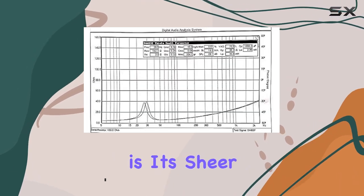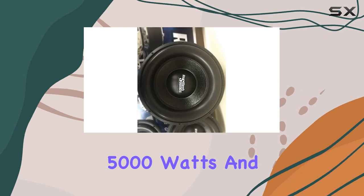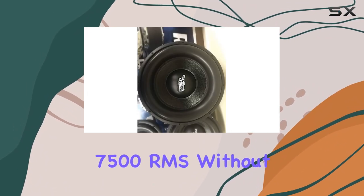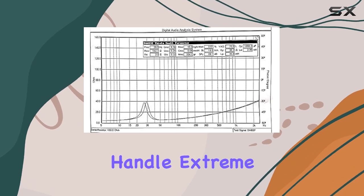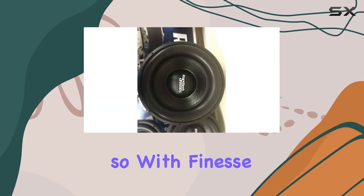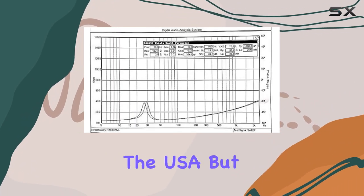What sets the Team 15 apart is its sheer power. With a conservative RMS rating of 5000 watts and tested at nearly 7500 RMS without breaking a sweat, this subwoofer is built to handle extreme power levels. And it does so with finesse, thanks to its 4.8-layer flat wound aluminum coil made in the USA.